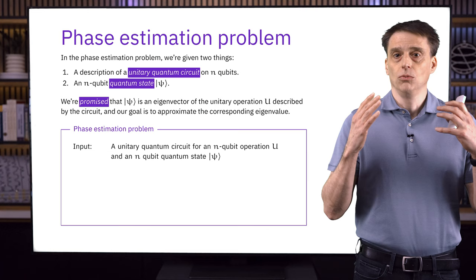In the last part of the lesson, we'll apply the technique of phase estimation to the integer factorization problem. The way this works is that we consider an intermediate problem known as the order-finding problem. We'll see how we can solve the order-finding problem using phase estimation, and then briefly discuss how solving the order-finding problem allows us to factor integers efficiently. This second part — factoring from order-finding — is completely classical.